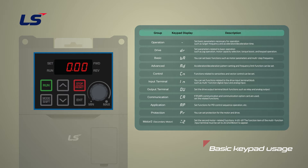Next, we will see how to move between codes within a group. Use the up and down arrow keys to move between codes. If you press the up arrow key, you can move to the next parameter. Press the down arrow key to move to the previous parameter.